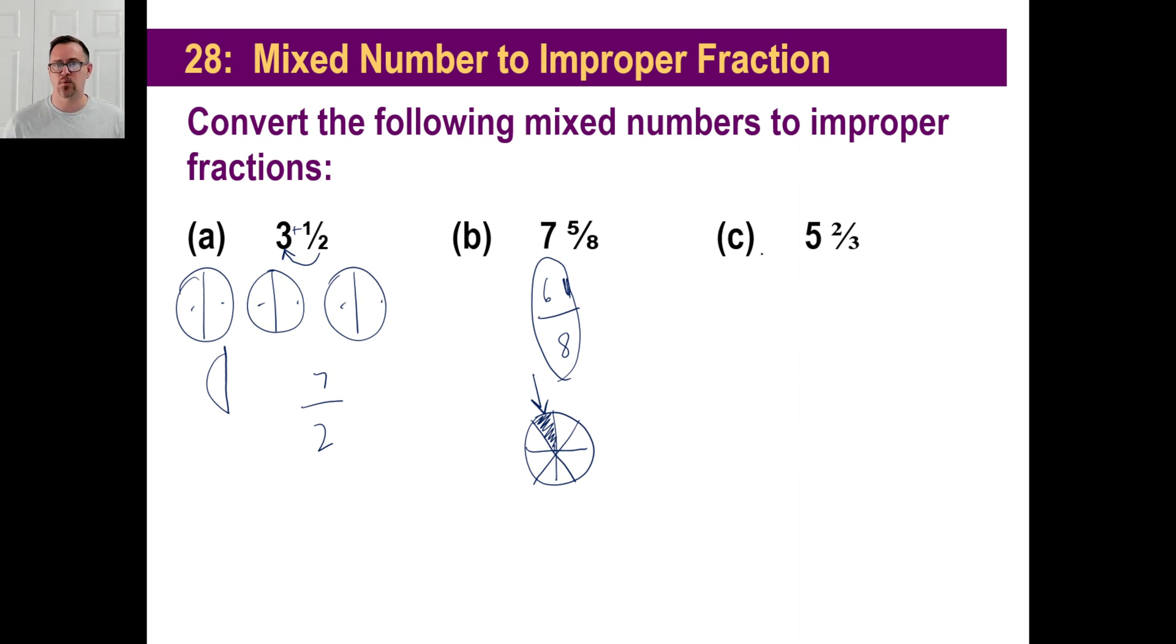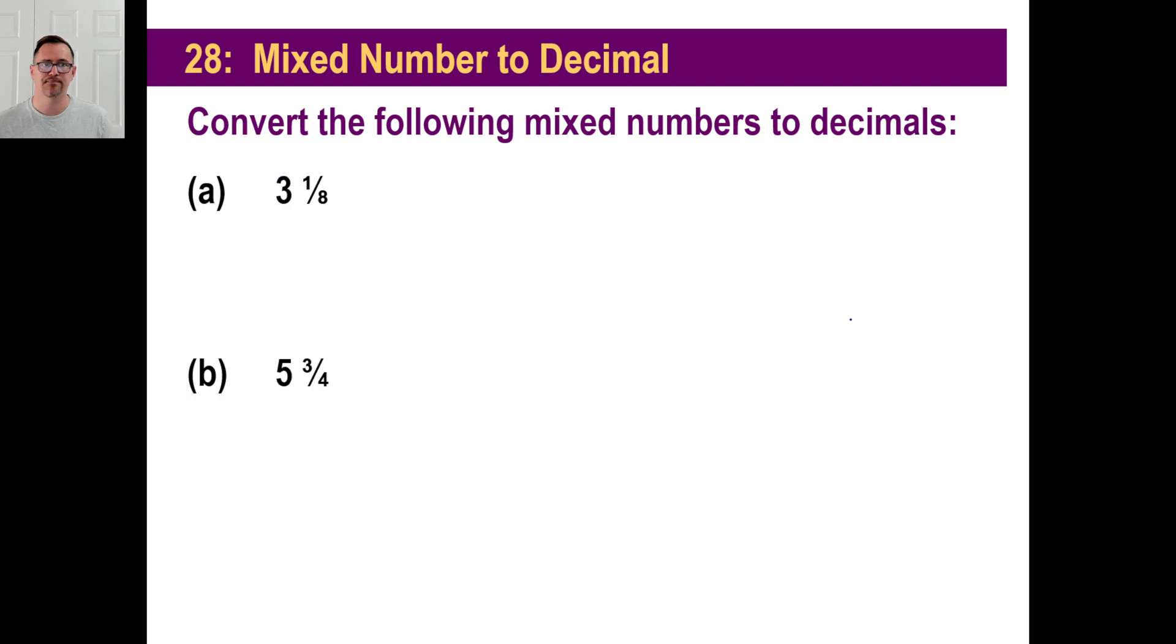Five and two thirds, well, same old thing. Three times five is 15, plus two is 17, that's 17 thirds, there you go.